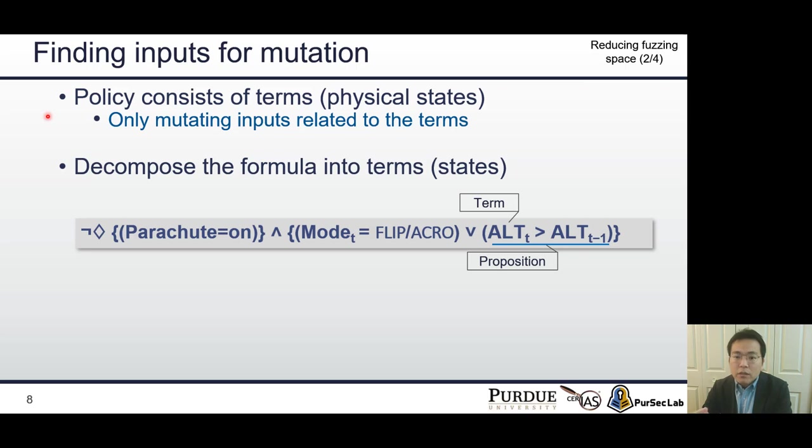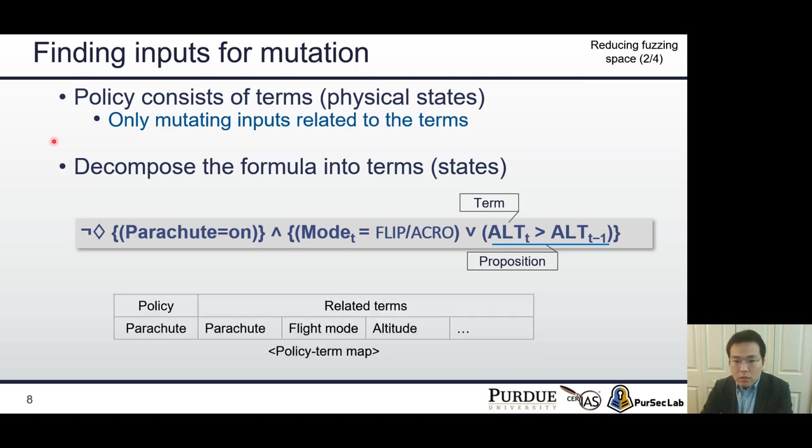Each policy consists of terms, also known as RV's physical state. If we only mutated input related to the terms, we can get rid of so many inputs unrelated to the policy. To do that, we first need to decompose the MTL formula into terms. For example, we can extract parachute term from the first proposition, fly mode from the second proposition, and from the last proposition, we can extract altitude term.